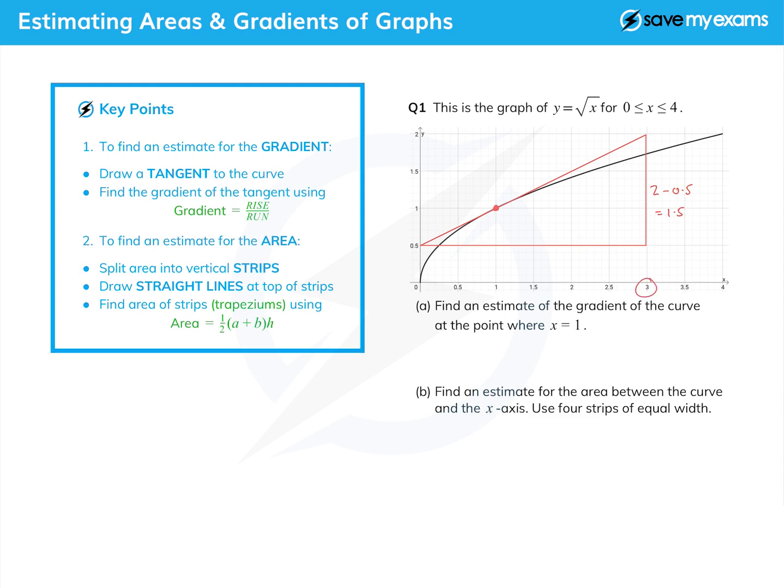You can see that the run takes us up to three on the horizontal axis, so that distance there is three. Having drawn the tangent, we can say that the gradient is rise over run, that's 1.5 over 3, which actually very neatly comes out to be an estimate of 0.5 for that gradient.